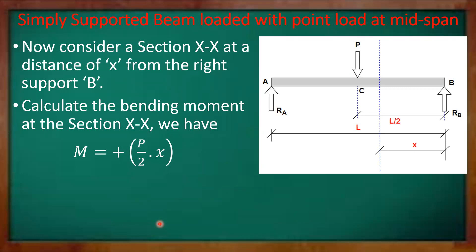We now consider a section XX at a distance x from support B. When we calculate the bending moment at section XX, we have the reaction force R_B into the distance x, so the bending moment M equals positive P/2 times x.